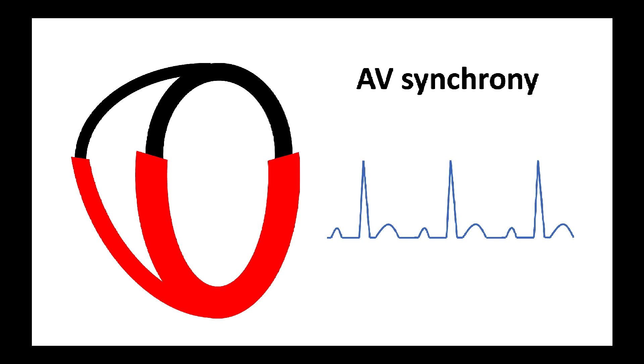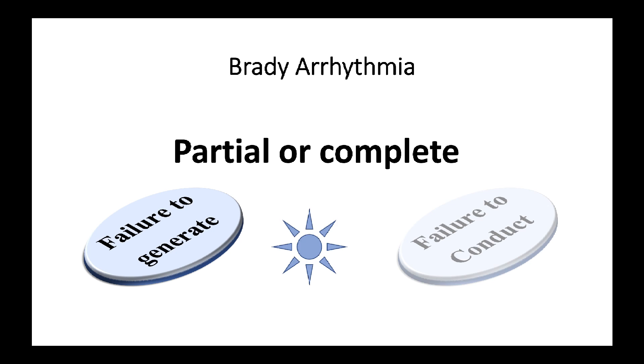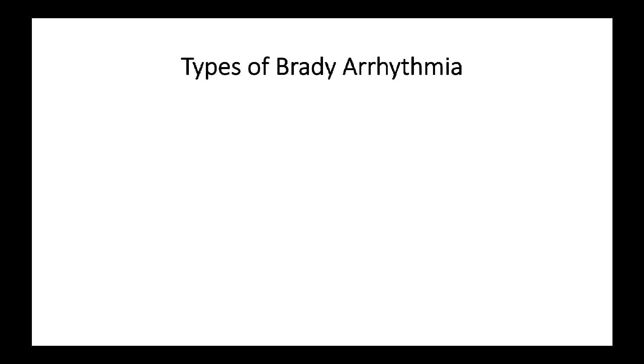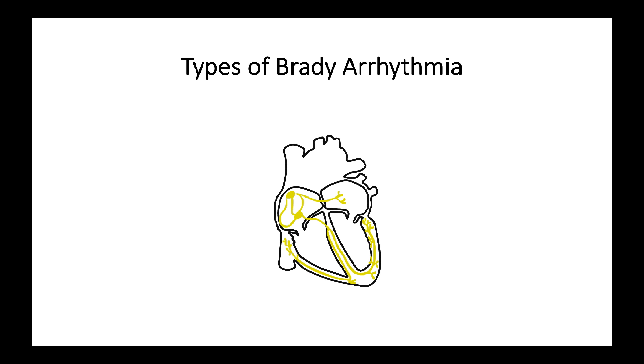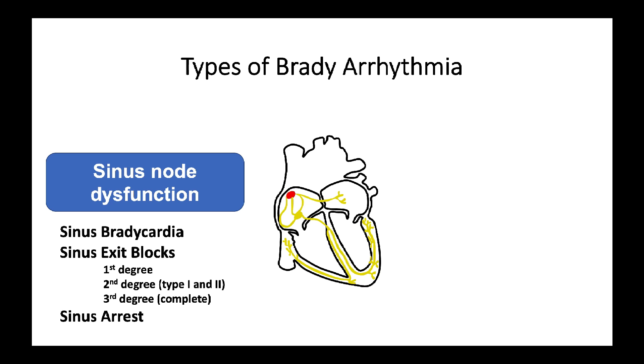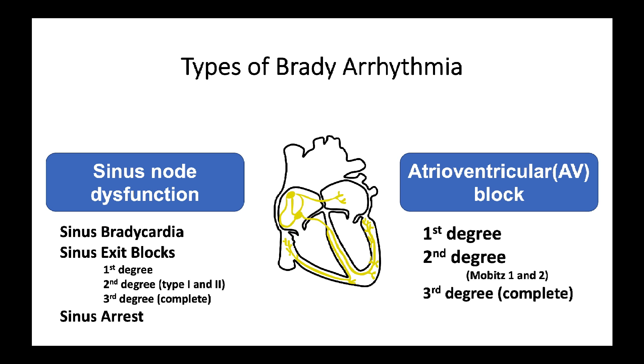Coming to the topic of bradyarrhythmia: if cardiac electrical activity is the result of impulse generation and impulse propagation, then bradyarrhythmia can be defined as partial or complete failure in impulse generation or conduction. While those two pathophysiological mechanisms can affect anywhere along the conduction system, the two most clinically relevant phenotypes of cardiac bradyarrhythmia are sinus node dysfunction and AV nodal blockage, both of which can be the result of dysfunction in impulse generation or dysfunction in impulse propagation.